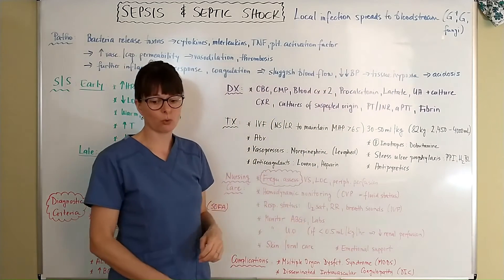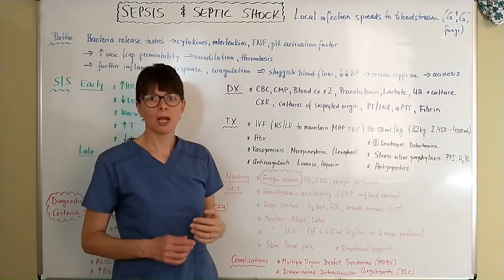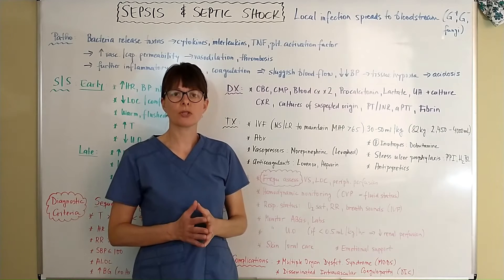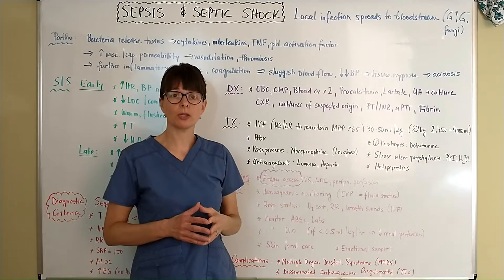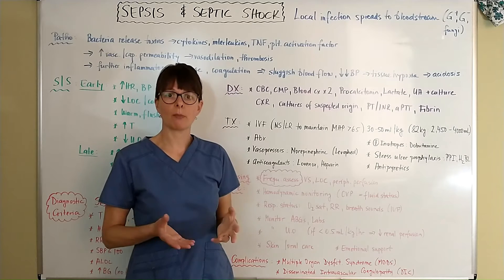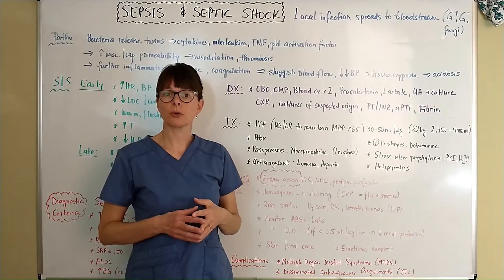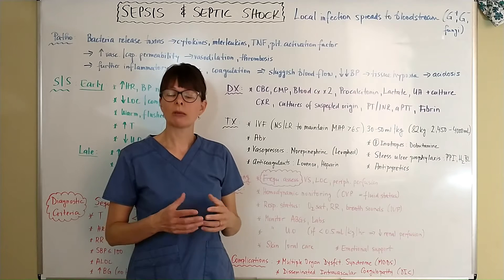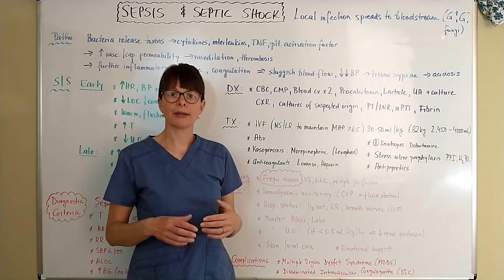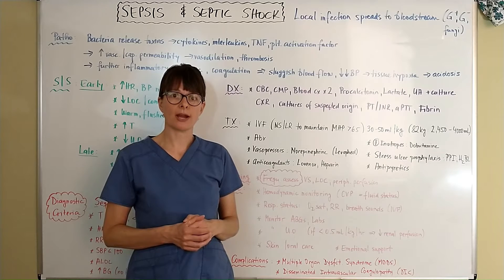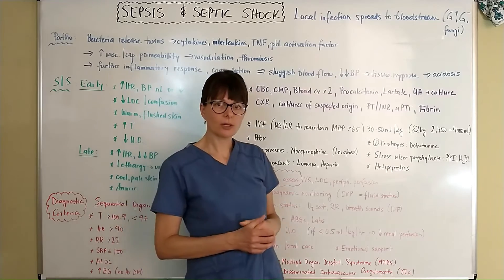Most of the time the source originates from either the respiratory or the urinary system. This could be a common cough and cold that turns into pneumonia that turns the patient septic, or maybe a UTI or a kidney infection that spreads from the urinary tract into the bloodstream.